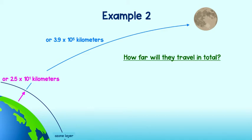To find the total kilometers traveled, we're going to have to add the two distances together. Remember, when adding or subtracting expressions in scientific notation, they must be the same powers of 10.